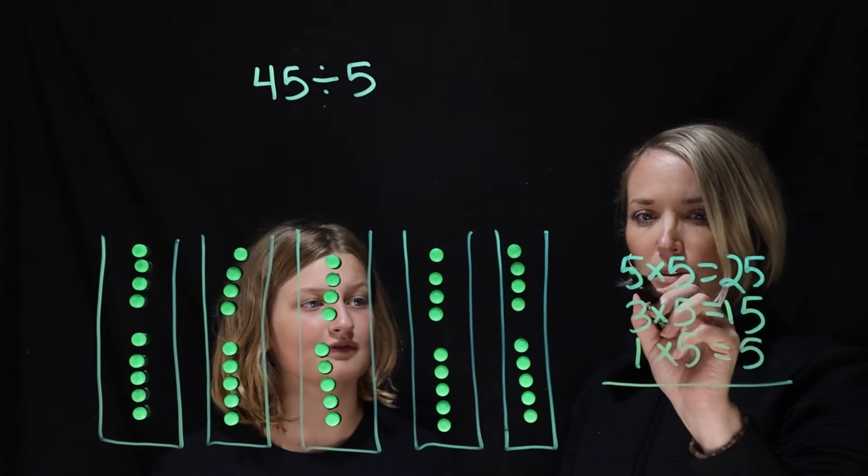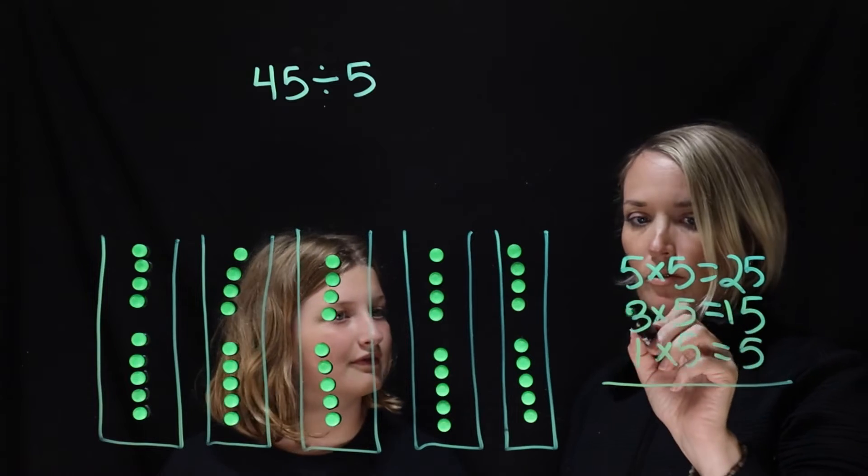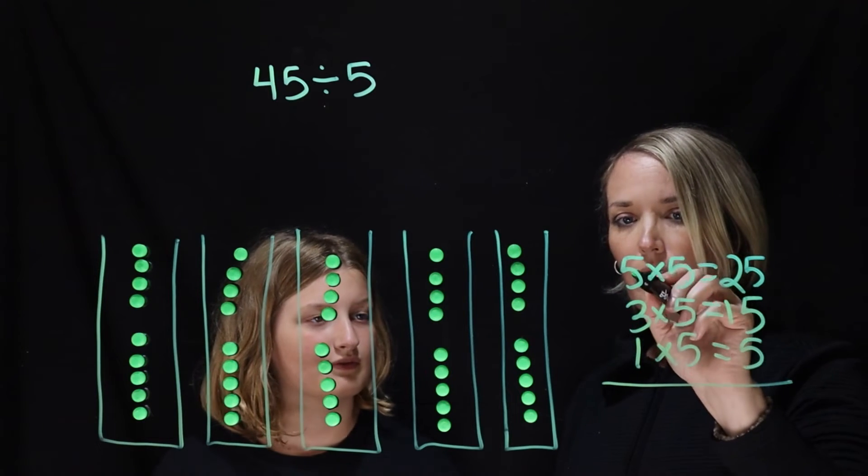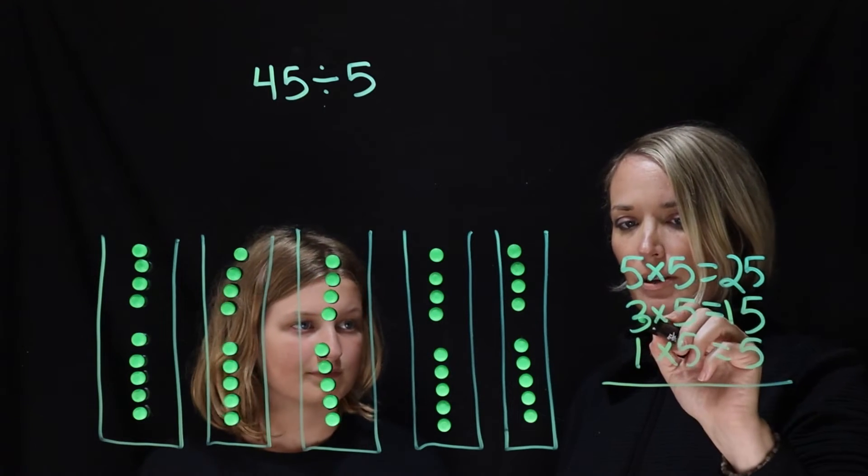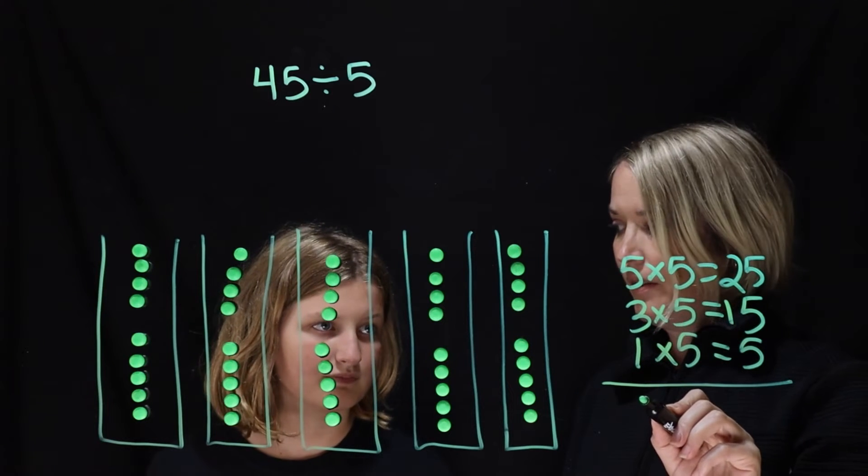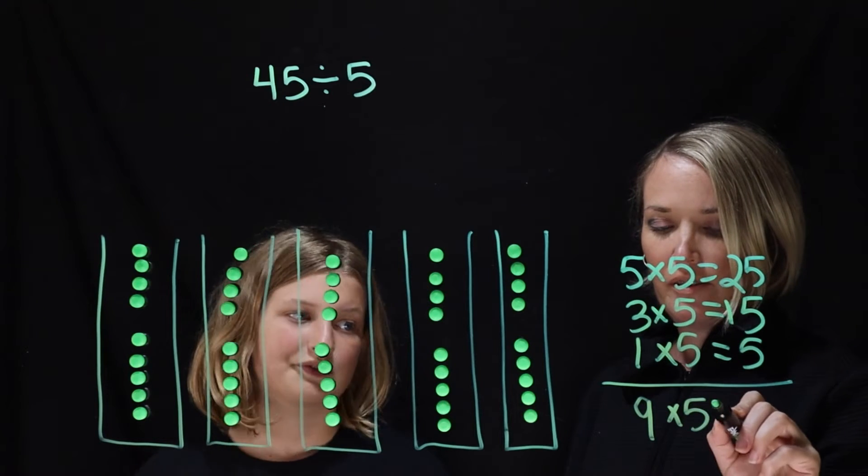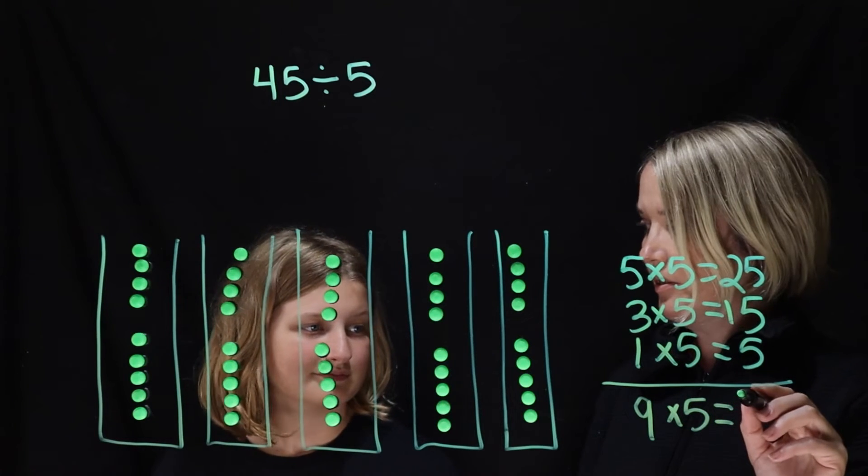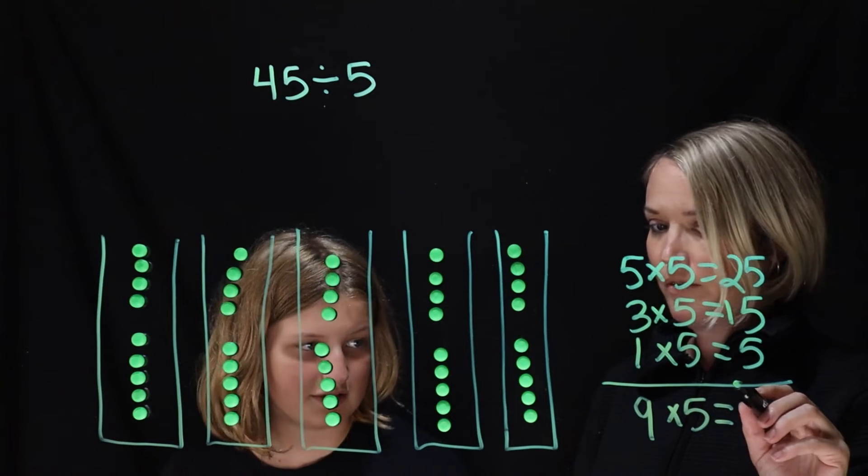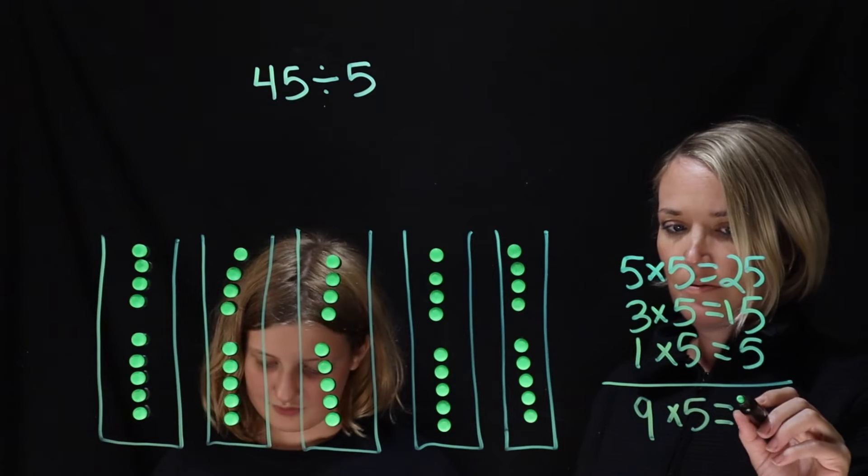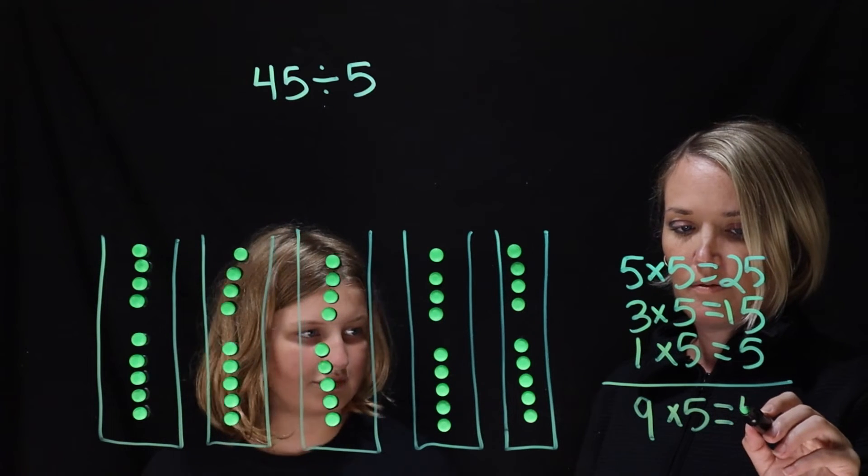So there's 9 in each bag. And check this out, Anna. Because this was like 5 groups of 5. 3 groups of 5. So look, if we go 5 plus 3 plus 1. It equals 9. And 9 groups of 5 equals? 9 groups of 5? 45. Yep.